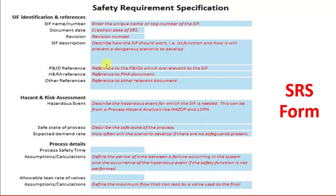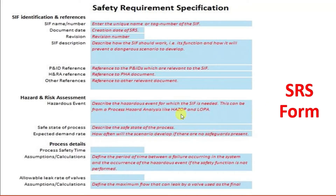The P&ID (piping and instrumentation diagram) reference is inputted in the next field. The H&RA reference — hazard and risk analysis reference — is available from the PHA (process hazard analysis) document. Any other references applicable to the particular CIF can also be included. In the hazard and risk assessment section, the hazardous event for which the CIF is needed must be described — this can come from a process hazard analysis such as HAZOP and LOPA, which are two different tools.